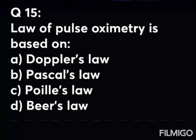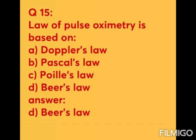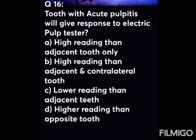Question 15: The law of pulse oximetry is — Option A: Doppler's law. Option B: Pascal's law. Option C: Poilier's law. Option D: Beer's law. The answer is Option D — Beer's law. The principle of pulse oximetry is based on Beer and Lambert law, which states that the concentration of an absorbing substance in solution can be determined from the intensity of light transmitted through that solution. In Beer's law, the intensity of transmitted light decreases exponentially as the concentration of the substance increases; in Lambert's law, it decreases exponentially as the distance traveled through the substance increases.